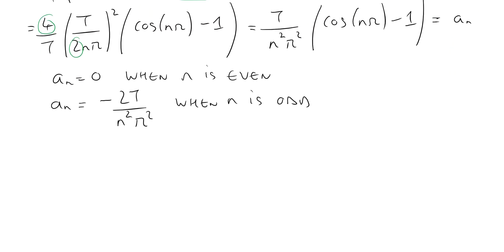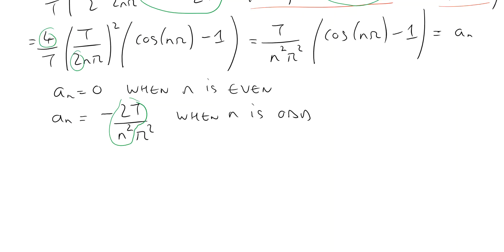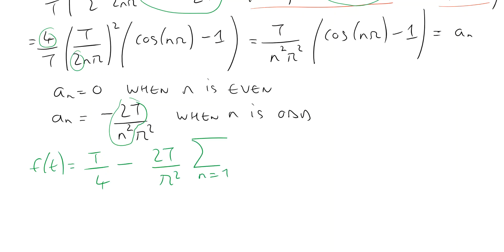Finally, we can write down the full result for the Fourier series. We can write that f(t) equals a0 over 2, which gives T over 4, minus the constant term 2T over π squared, times the summation from n equals 1 to infinity where n can only have odd values, of (1/n²) times cos(2nπt / T). And that's our result for the Fourier series.